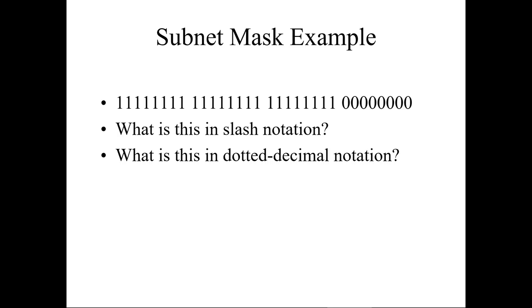Here it is broken up in binary — notice 8 bits, space, 8 bits, space, 8 bits, space, 8 zeros. How many ones are there? There are 24 ones. So in slash notation that would be /24. In dotted decimal, it would be 255.255.255.0.